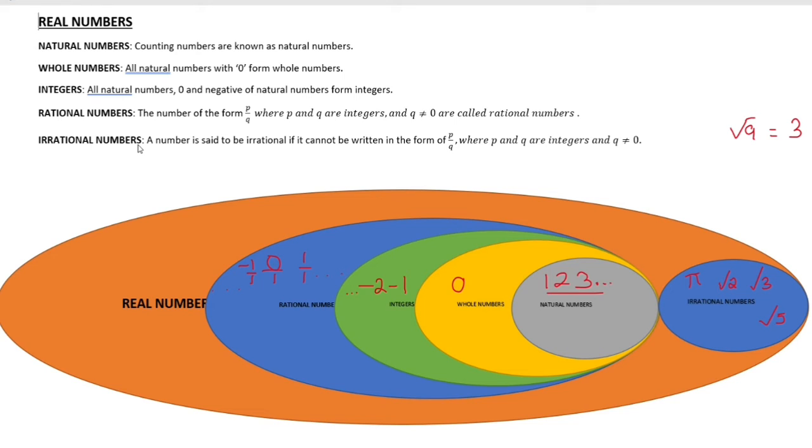Irrational Numbers. A number is said to be irrational if it cannot be written in the form of p by q.